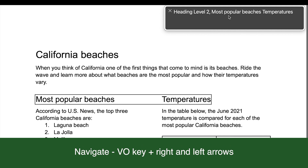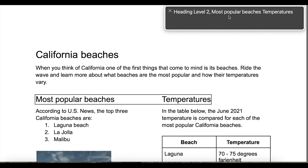Next, I'll use my VoiceOver key plus right and left arrow keys to navigate. I should be able to navigate through the document's reading order, and the image should have alternative text.